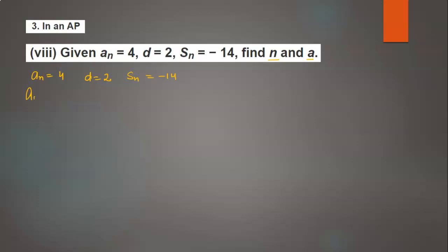First of all, we write the formula of nth term: an = a + (n-1)d. So an is 4, a as it is, (n-1) as it is, and d is 2.